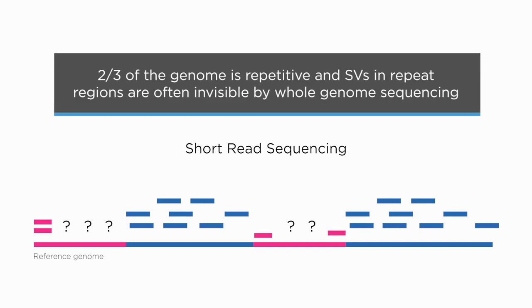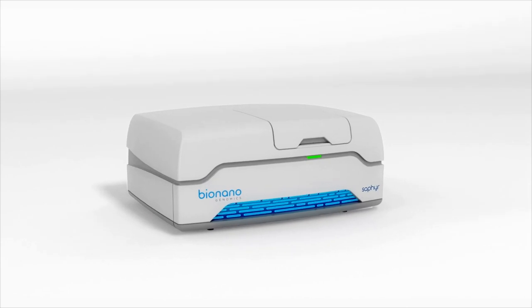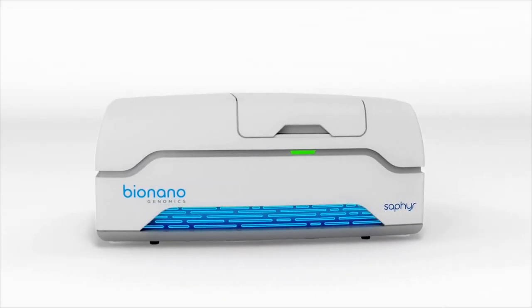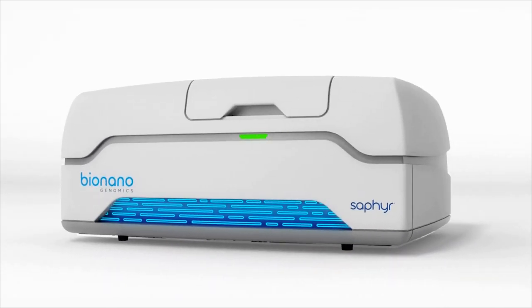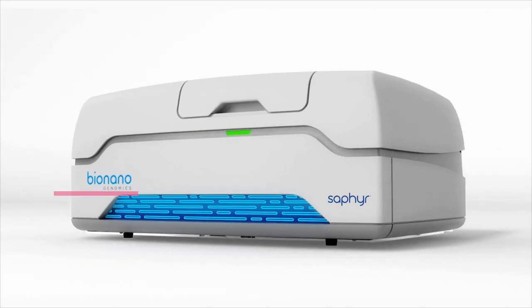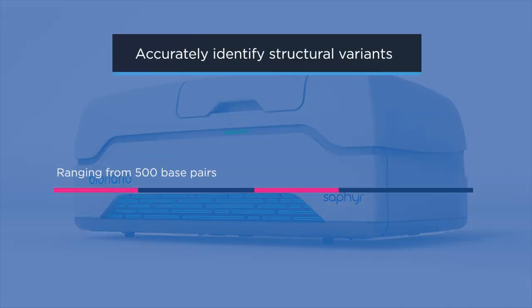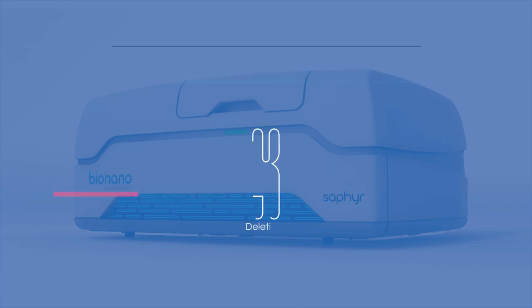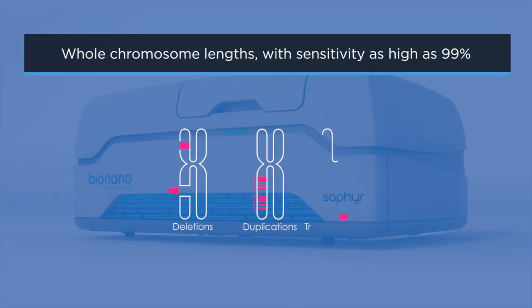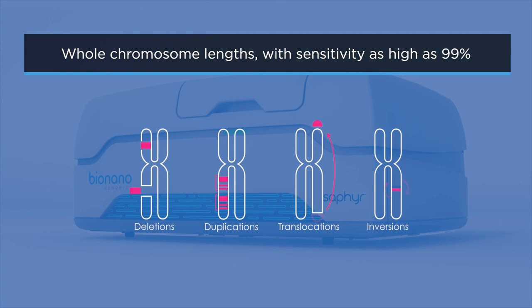What's more, two-thirds of the genome is repetitive, and structural variants in repeat regions are often invisible by whole genome sequencing. Whole genome imaging with the SAFIRE system takes an entirely different approach to understanding the structure of DNA through imaging. It has proven to accurately identify structural variants ranging from 500 base pairs to whole chromosome lengths, with sensitivity as high as 99%.